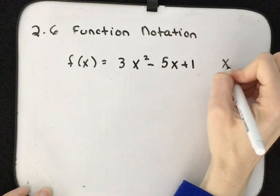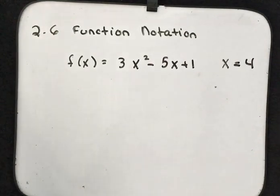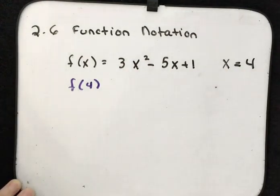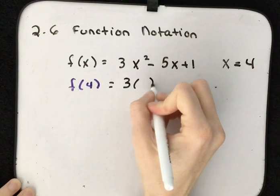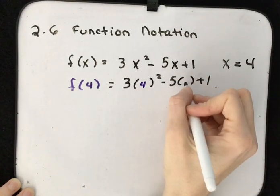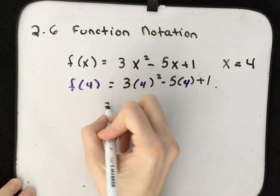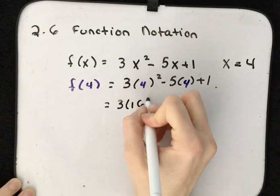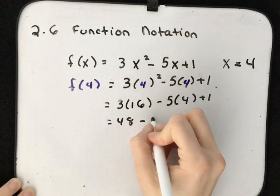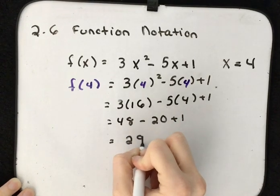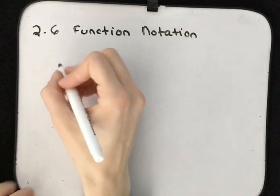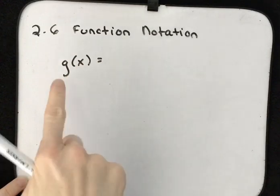Let's say we want to evaluate f of x when x equals 4. That means we want to find f of 4. The 4 is going to replace the x everywhere we see an x. Rewrite the function, leave a parenthesis where you see the x, then fill in 4. So 4 squared gives us 16, 3 times 16 gives us 48, 5 times 4 is 20, and that gives us 29.